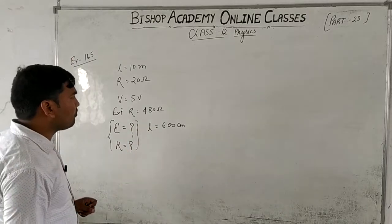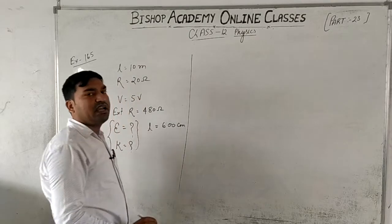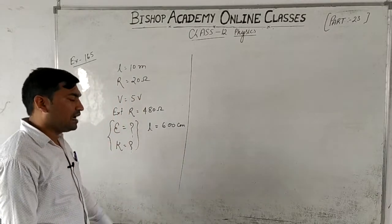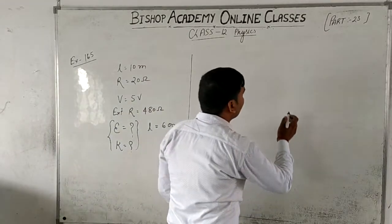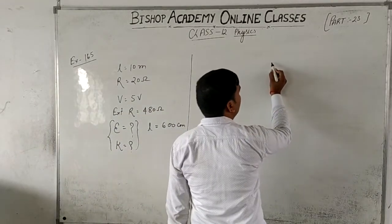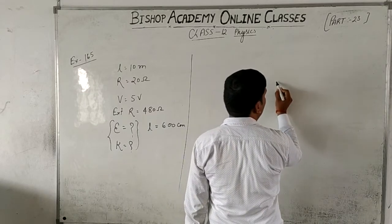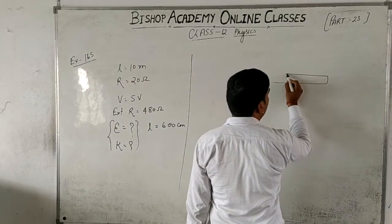When a question like this comes to you, you need to draw a circuit diagram. We have a potentiometer wire — we draw it in a zig-zag form.